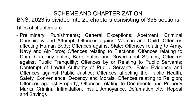Then we have offenses affecting human body. There is a separate chapter titled offenses against state. The next chapter deals with offenses relating to army, navy, air force. Then we have offenses relating to elections, then offenses relating to coins, currency notes, bank notes, government stamps. Offenses against public tranquility — anybody committing a riot, creating any kind of alarm or scare in the society — all that needs to be taken care of. Anybody whose acts have the propensity to disturb the peace, public tranquility, all that have been put together.